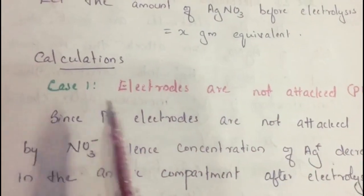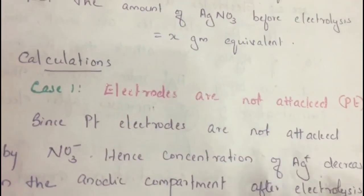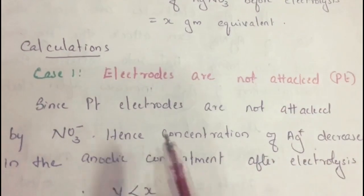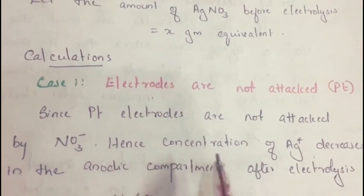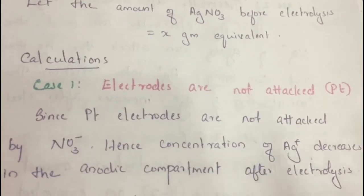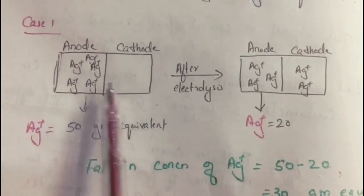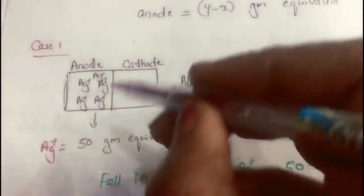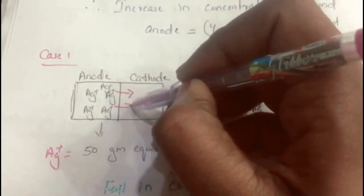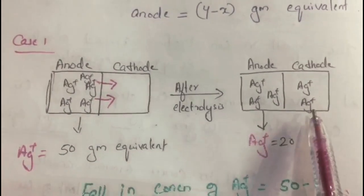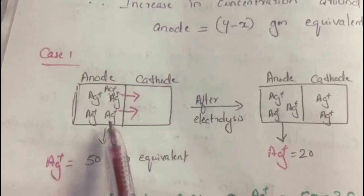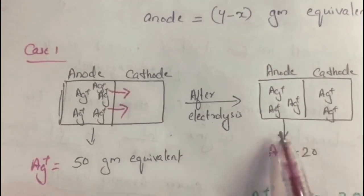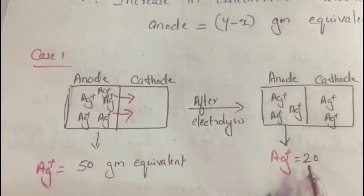Case 1: Electrodes are not attacked — we are using platinum electrodes. Since platinum electrodes are not attacked by NO3−, the concentration of Ag+ decreases in the anodic compartment after electrolysis. For example, if 50 gram equivalents of Ag+ were present before electrolysis, some Ag+ moves to the cathode and is deposited there. After electrolysis the concentration might be 20 gram equivalents. Therefore the fall in concentration equals 50 minus 20 equals 30 gram equivalents. Y will be less than X.